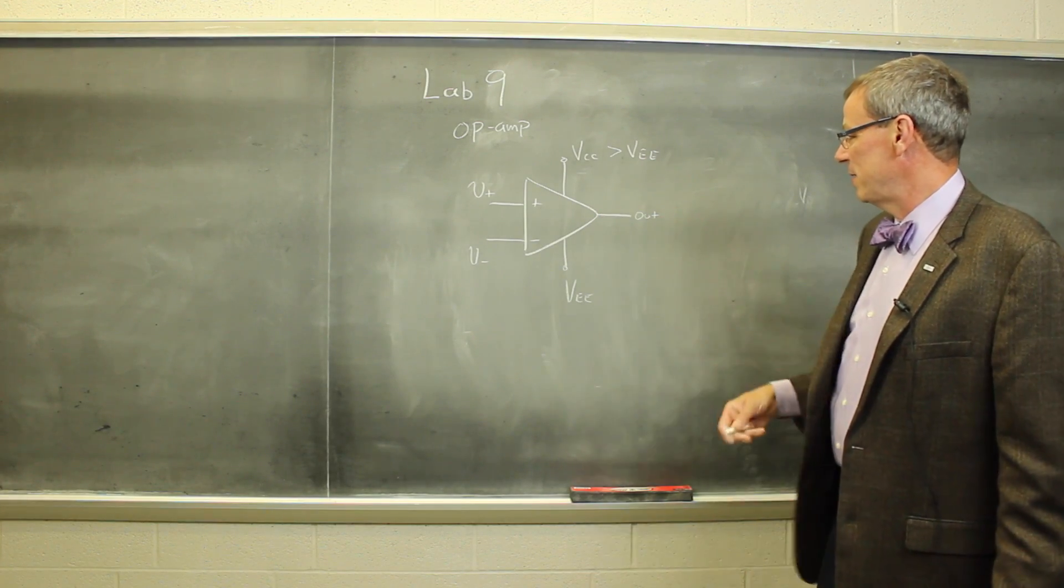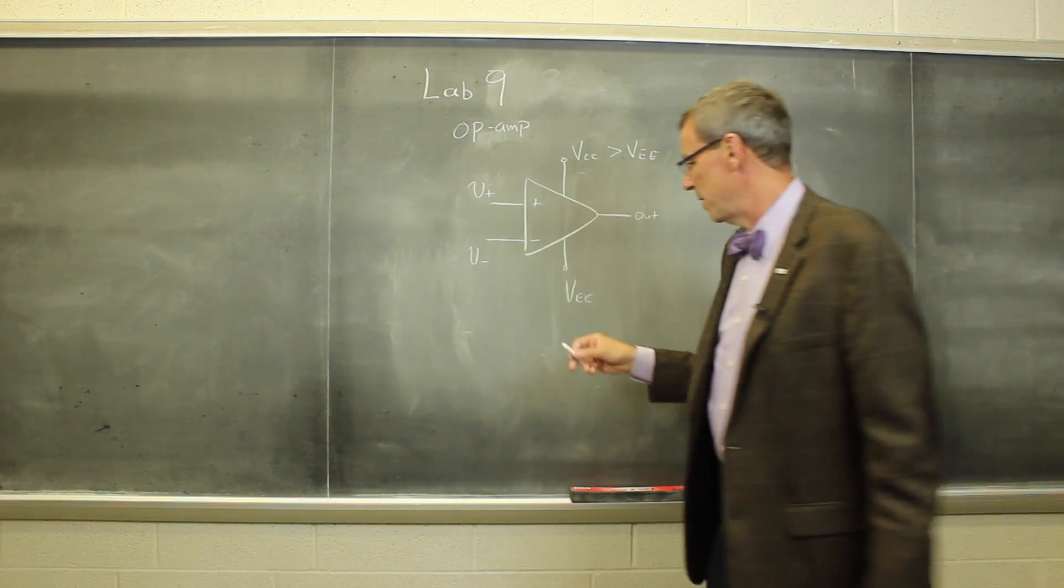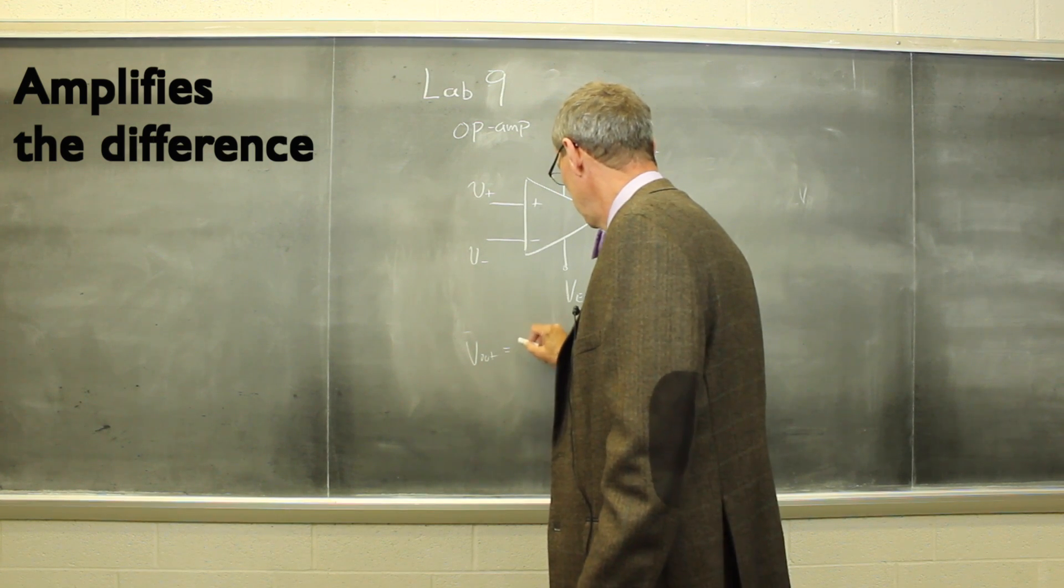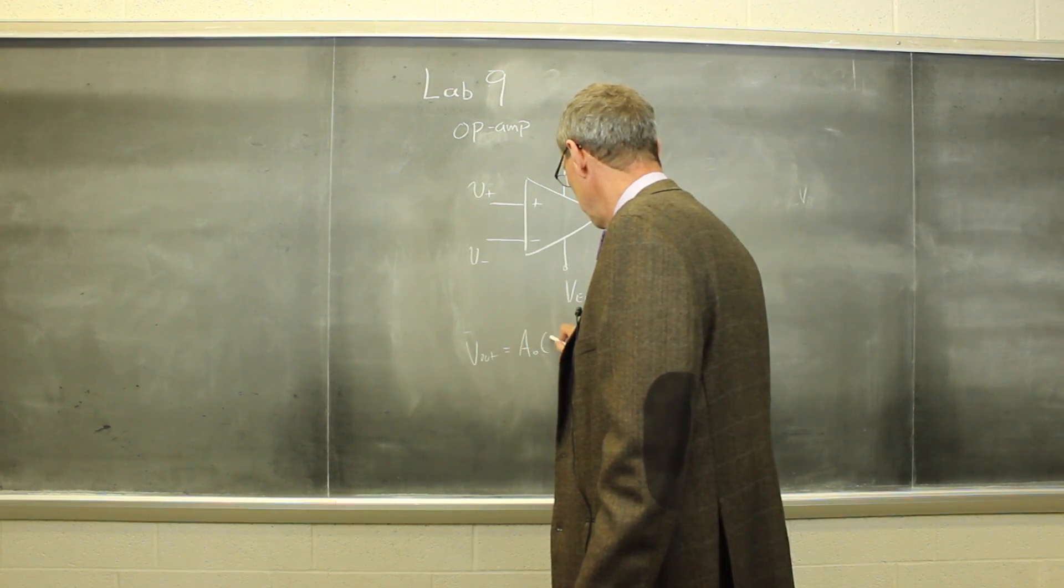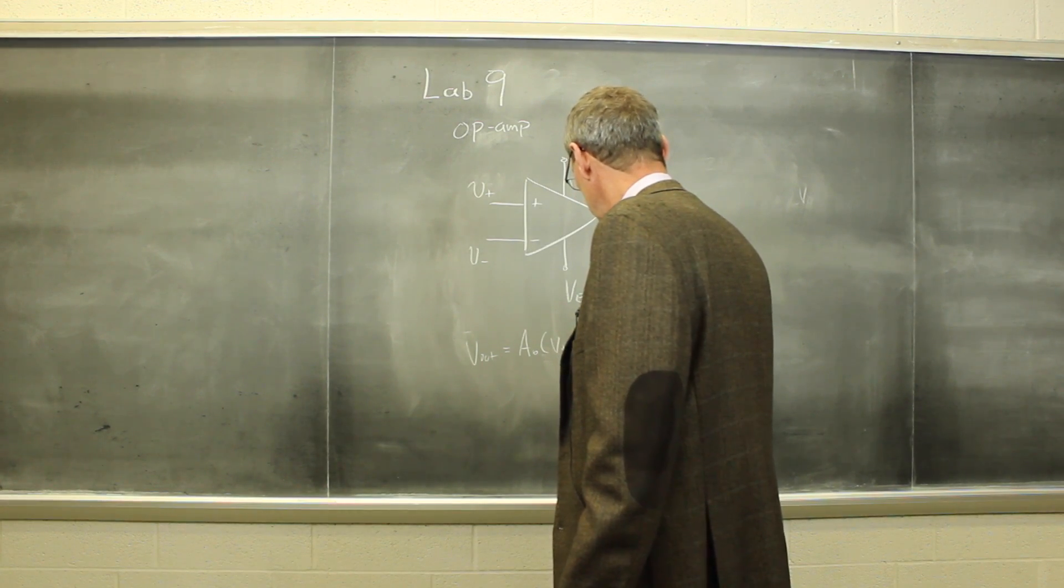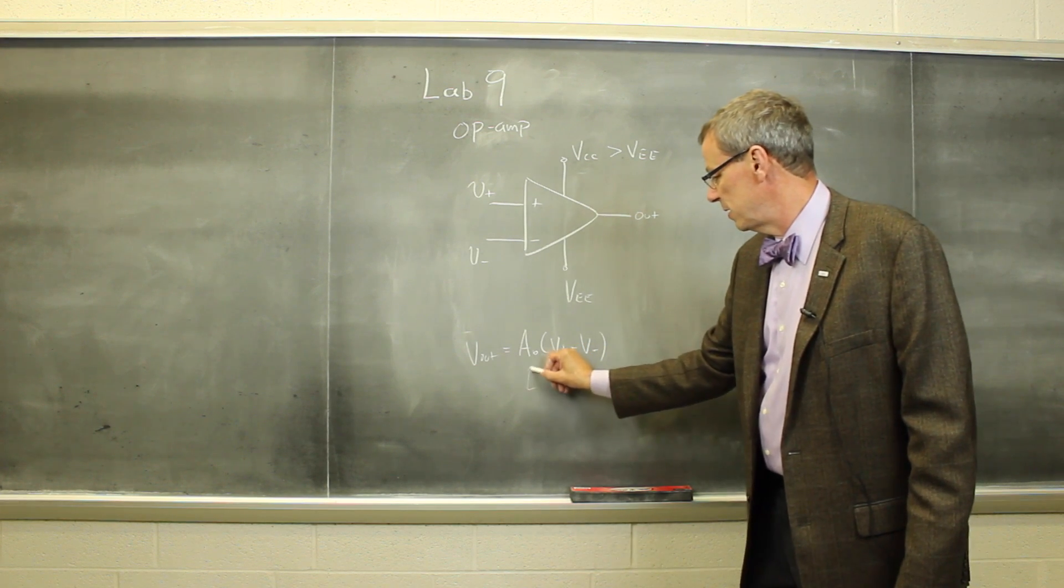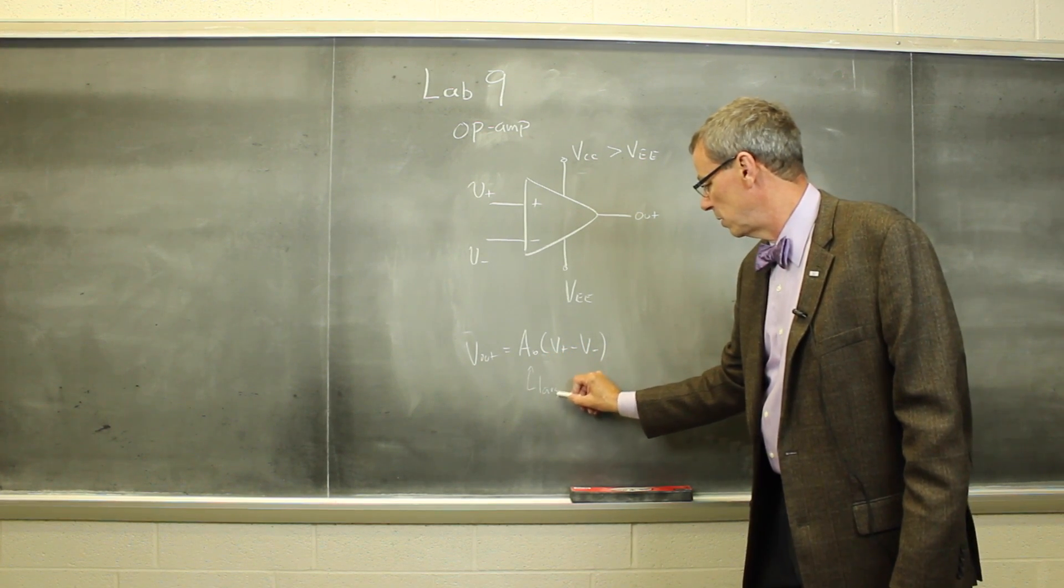The nominal behavior of this op-amp is that the output voltage is some open-loop gain, which is a large number, times the difference of the two voltages there. So it amplifies the difference of those two, and this is large.